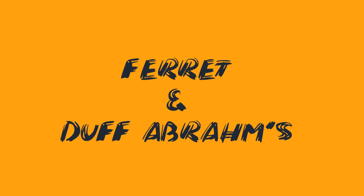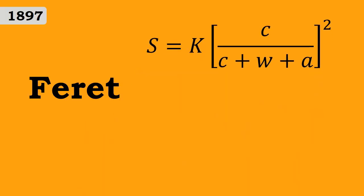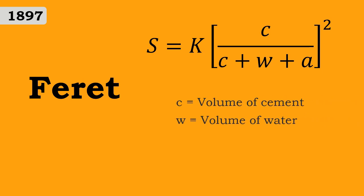Let us now see some of the equations given by Ferret and Duff Abrams to calculate the strength of concrete. In 1897, Ferret proposed a rule defining the strength of concrete paste in terms of volume fractions of the constituents as: S equals K into C divided by (C plus W plus A), the whole square. Where C is the volume of cement, W is the volume of water, A is the volume of air, and K is a constant.